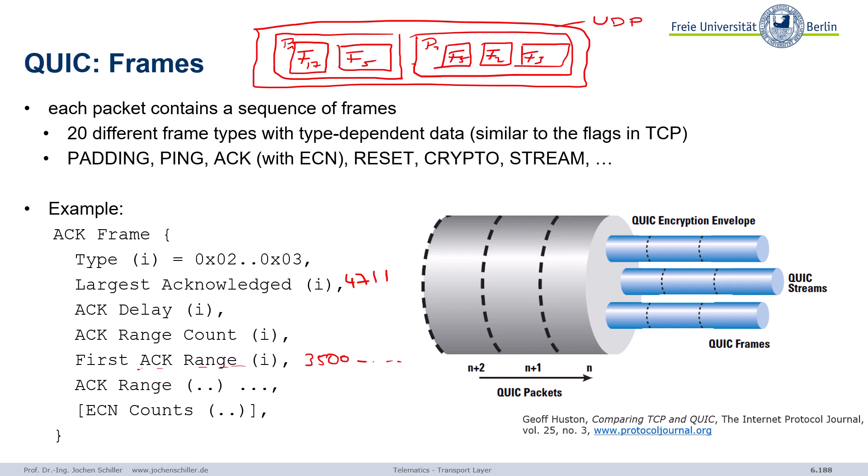With this packet-frame-stream structure within one connection, only the connection requires one round-trip time for setup — which is already faster compared to classical TCP.